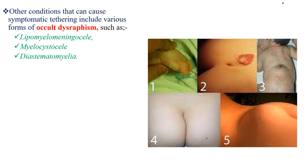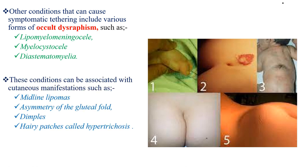Other conditions that cause symptomatic tethering include various forms of occult dysraphism, such as lipomyelomeningocele, myelocystocele, and diastematomyelia. These conditions can be associated with cutaneous manifestations such as midline lipomas, asymmetry of the gluteal fold, dimples, and hair patches called hypertrichosis.